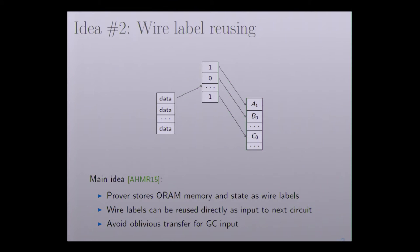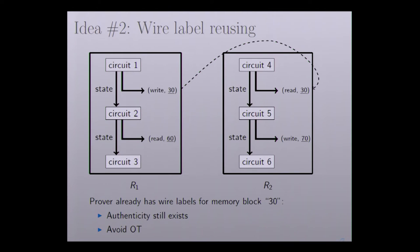For example, suppose we have two proofs R1 and R2. In small circuit one of R1, it writes some data — say 30 — to a memory block. In the next proof R2, circuit number four wants to read the data from that memory block. Since the prover already has those wire labels, the prover can use them directly as input to R2, which helps us avoid the oblivious transfer.